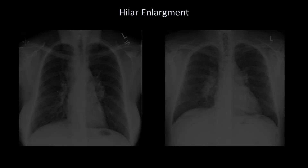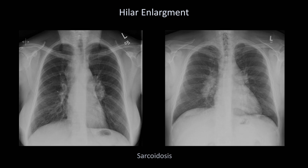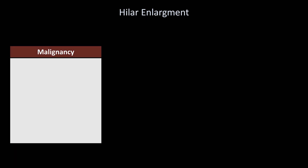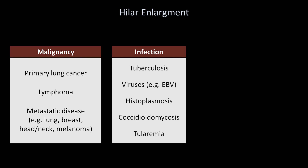I will move on from the mediastinum to talk about the hila. Here are two examples of bilateral hilar enlargement — in this case, both patients had stage 1 sarcoidosis. The differential diagnosis of hilar enlargement is very long and can be divided into three categories. First, malignancy, which includes primary lung cancer, lymphoma, and metastatic disease. The second category is infection, particularly tuberculosis and viruses, but a whole host of rare diseases are included here as well. Depending on where in the world you are practicing and watching this video, there may be many more diseases on your list.